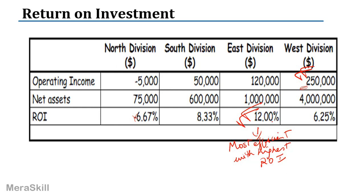It's not only about West division making huge profits — they had a huge investment and enough resources to generate that income. East division, with far less investment, has generated an optimal return of 120,000. So the manager here is far more efficient — the resources have been used far more efficiently. ROI reveals this difference in efficiency that raw profit figures do not show.